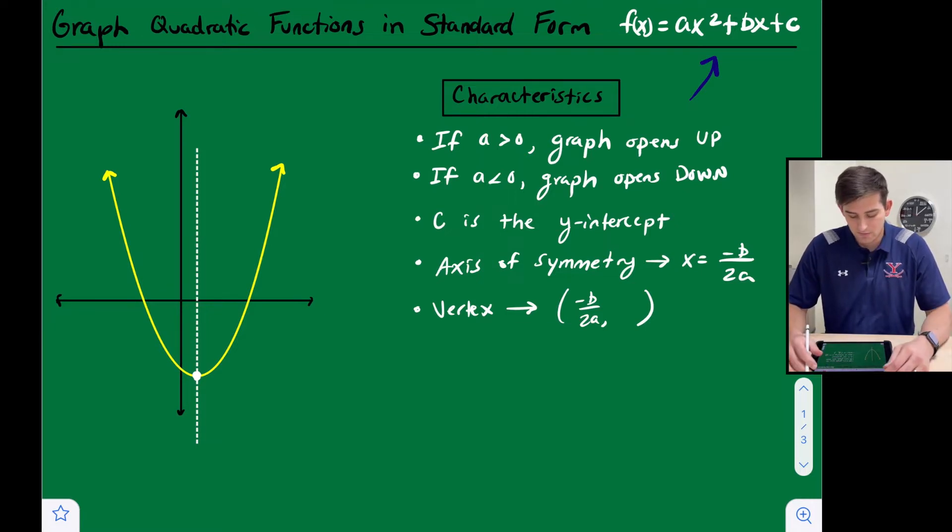And just like the axis of symmetry, the x coordinate of the vertex is opposite of b over 2a. And we can plug that value back in, in order to find the y coordinate of the vertex. Okay, so let's do a couple examples here.